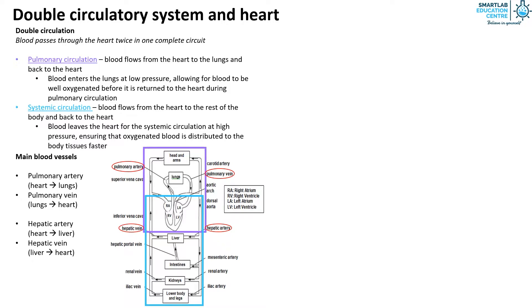The hepatic vein carries blood from the liver to the heart. The renal artery carries blood from the heart to the kidney, and the renal vein carries blood from the kidney to the heart.